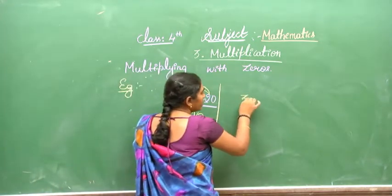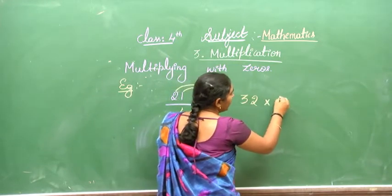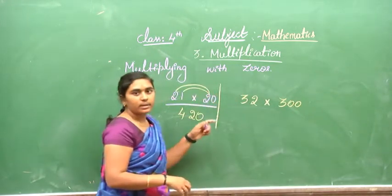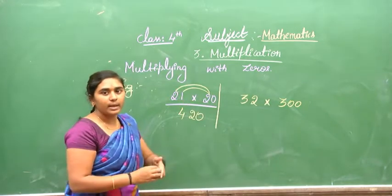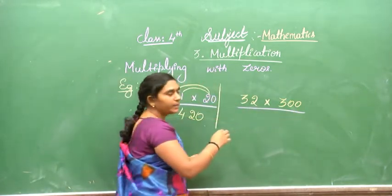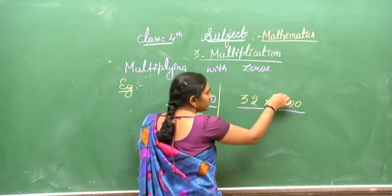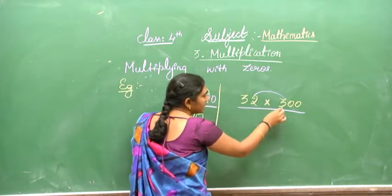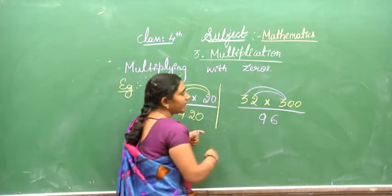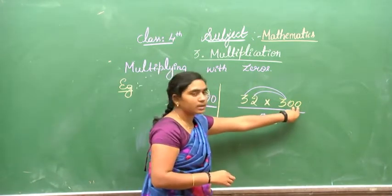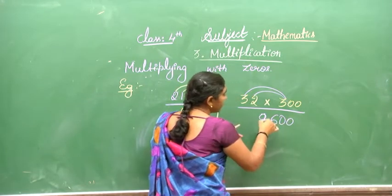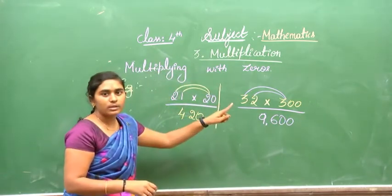One more example: 30 multiplied by 300. We multiply by 3 first — 3 times 3 is 9, and 3 times 2 is 6 — giving 9, and we append the zeros. So the answer is 9,600.